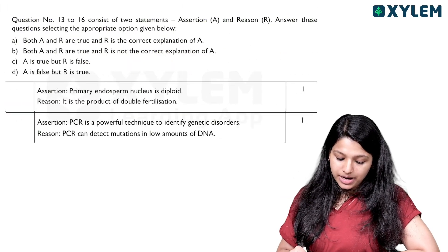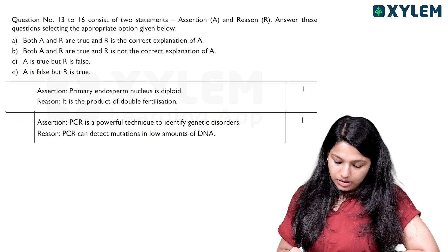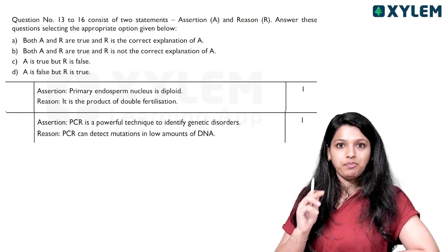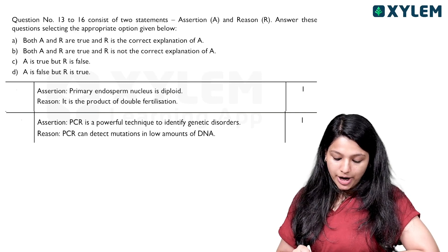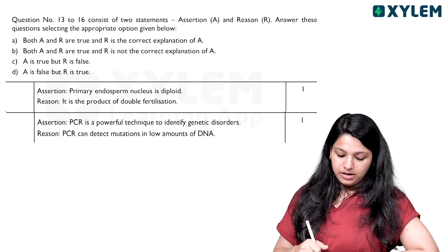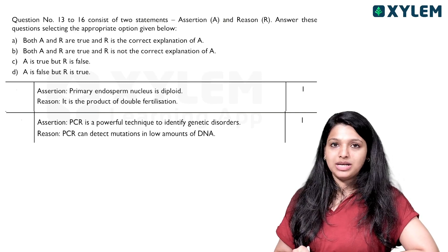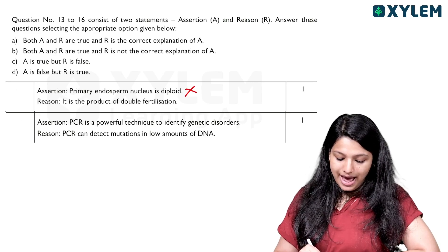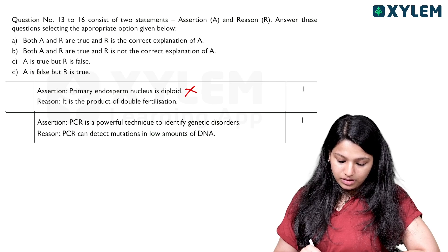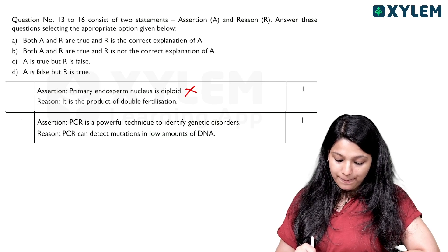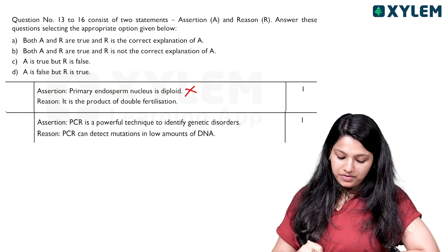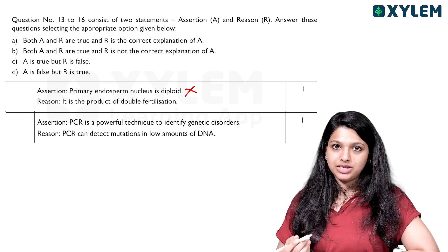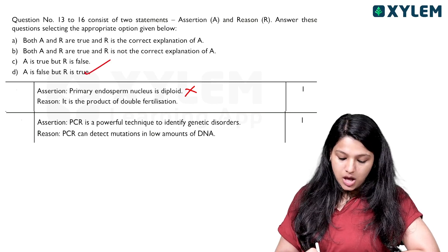Assertion-Reason: The assertion states that the primary endosperm nucleus is diploid. The reason states it is the product of double fertilization. The assertion is wrong — so A is false. The product of double fertilization explanation is correct. Therefore, option D is correct.